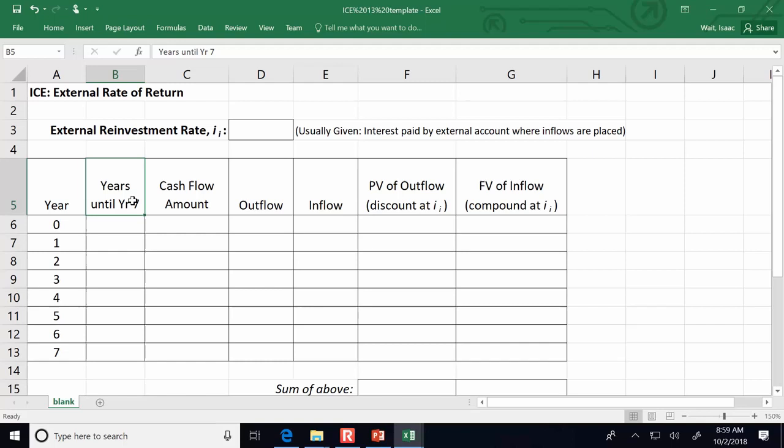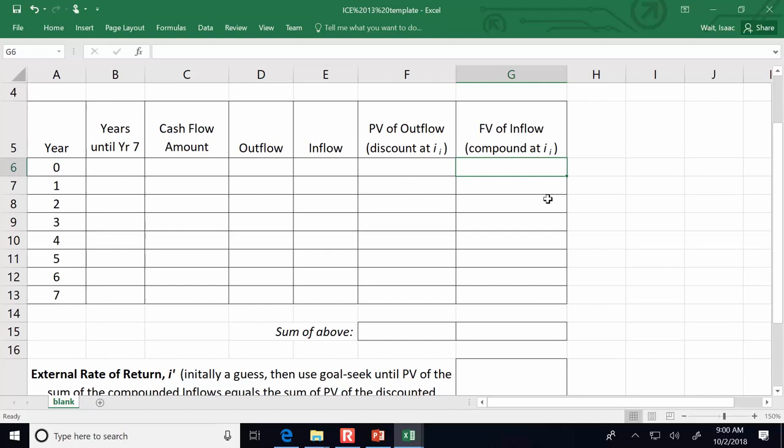We have here our net cash flows. We can't do reinvestment so we have to calculate the external rate of return and all of these profits that get generated are going to be put into an account that yields two point five percent. So that means the external reinvestment rate is two point five percent. So we want to know what's the external rate of return for this project. Now the template file, what I've done is I've outlined for you what the process should be.